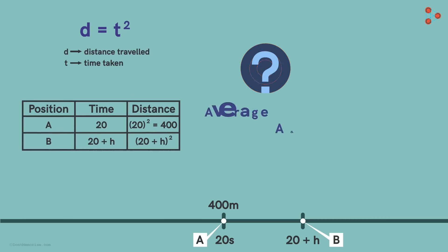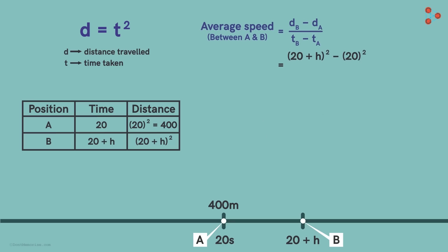So what will be the average speed between these two instances of time? The distance travelled will be this and the time duration will be this. And by doing some elementary algebra, we will get the average speed to be 40 plus h.